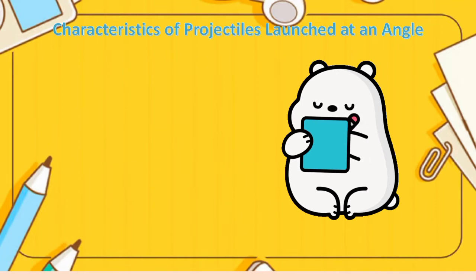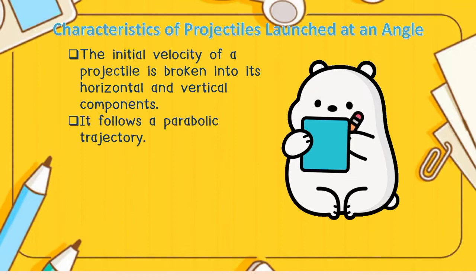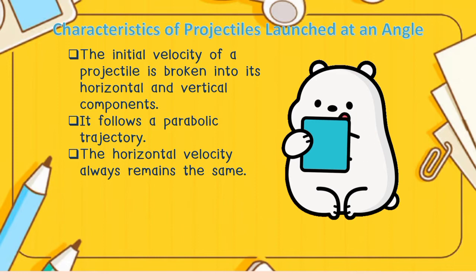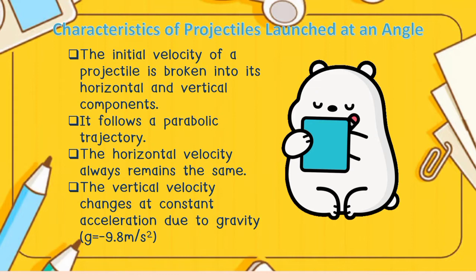The first characteristic: the initial velocity of a projectile is broken into its horizontal and vertical components. It also follows a parabolic trajectory. The horizontal velocity always remains the same, and the vertical velocity changes at constant acceleration due to gravity, equivalent to negative 9.8 meters per second squared.